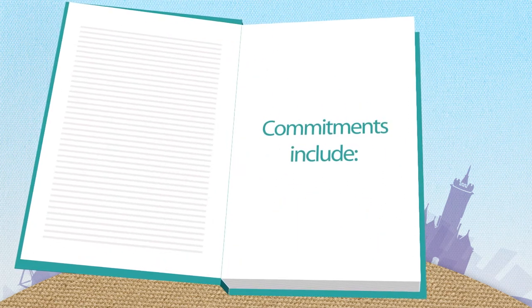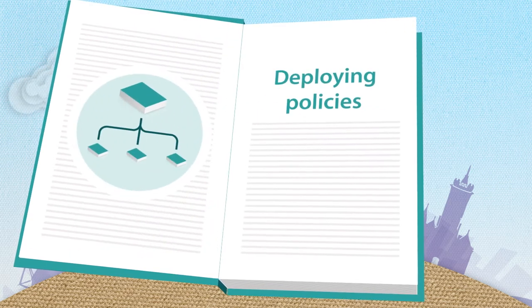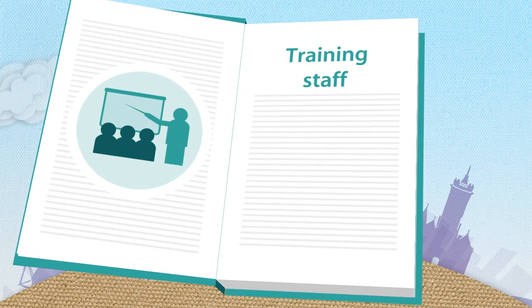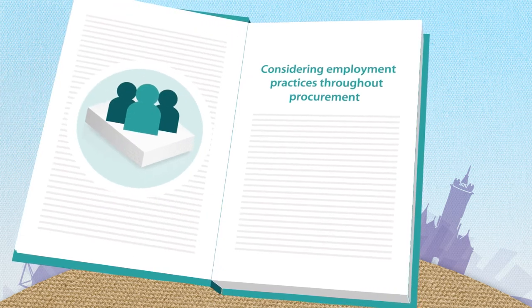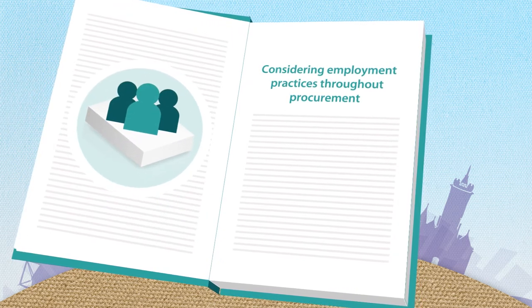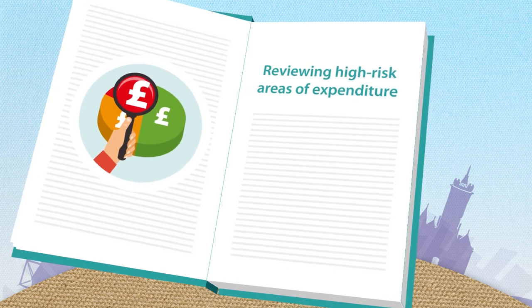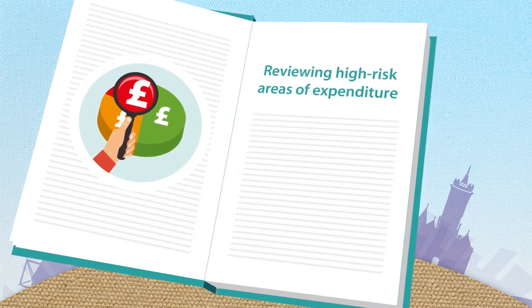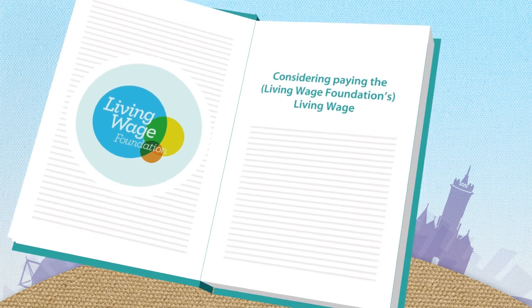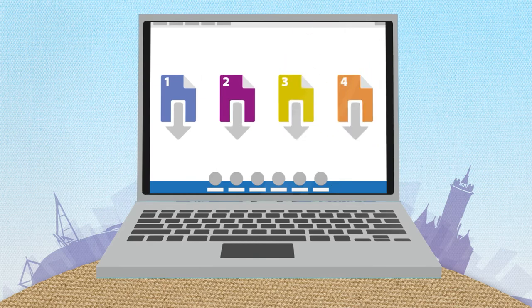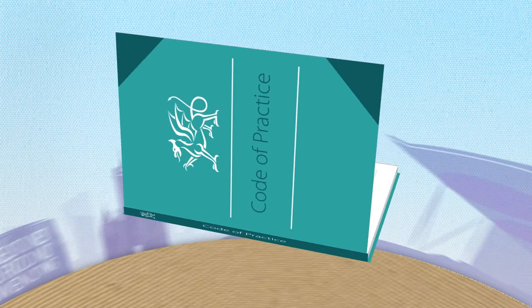Commitments include deploying policies, training staff, considering employment practices throughout procurement, reviewing high risk areas of expenditure, considering paying the Living Wage Foundation's Living Wage. Four online guides offer practical advice to help you implement the code.